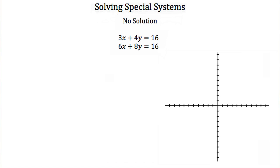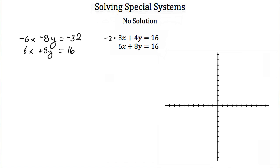I could solve this using elimination. I would multiply our first equation by negative 2 and we would get negative 6x minus 8y is equal to negative 32, then rewrite our second equation 6x plus 8y is equal to 16. Adding our equations, we end up with 0x plus 0y is equal to negative 16. This doesn't make any sense — 0 plus 0 can't equal negative 16.